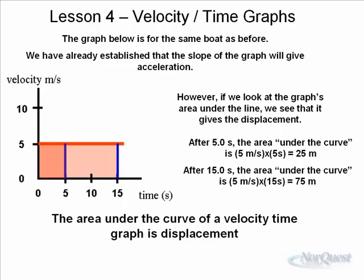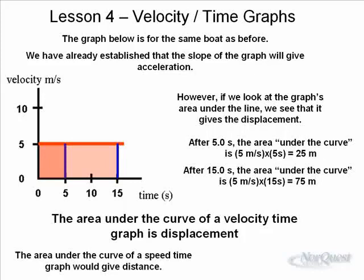We call it a curve — in mathematics, a curve means any line on a graph, whether straight or curvy. In this case it is a straight line, but we still call it a curve mathematically. When they say under the curve, they mean between the line itself and the x-axis. You can actually have a negative displacement, and we may look at some of those in examples later. If you had a speed time graph instead of a velocity time graph, you would get the distance instead of the displacement.